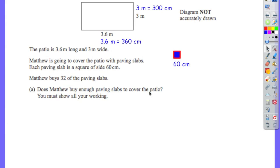This is question 2 on the GCSE paper 1 in June 2012. The question shows a patio in the shape of a rectangle. The patio is 3.6 metres long and 3 metres wide. Matty is going to try and cover the patio with paving slabs. The paving slab is a square of size 60 centimetres, and Matty is buying 32 of these slabs. You have to work out whether 32 is enough to cover the patio.